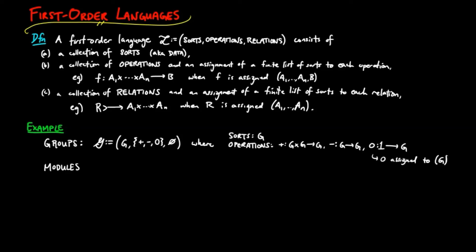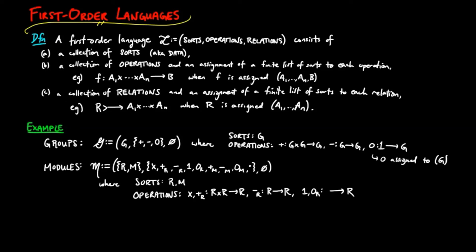Also, we have the signature for modules M, consisting of two sorts, R and M, operations which give R the structure of a ring, and M the structure of an R module. And again, there are no relations.